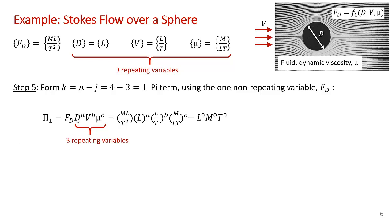Now I've got my four variables and my three repeaters, which I didn't have any choice of picking, but I've checked that they satisfy the rules for repeating variables. Now I move on to step five and I form my n - j = 1 pi parameter. We set up our three repeating variables here, raised to powers a, b, and c. And here's our only one non-repeater in this case. We replace the variable with the dimensions for each variable. So force is mass length over time squared, diameter is length, velocity is length over time, and dynamic viscosity is mass over length time. And I raise those to a, b, c. And ultimately I've got to adjust a, b, and c so that we have no dimensions on the left hand side.